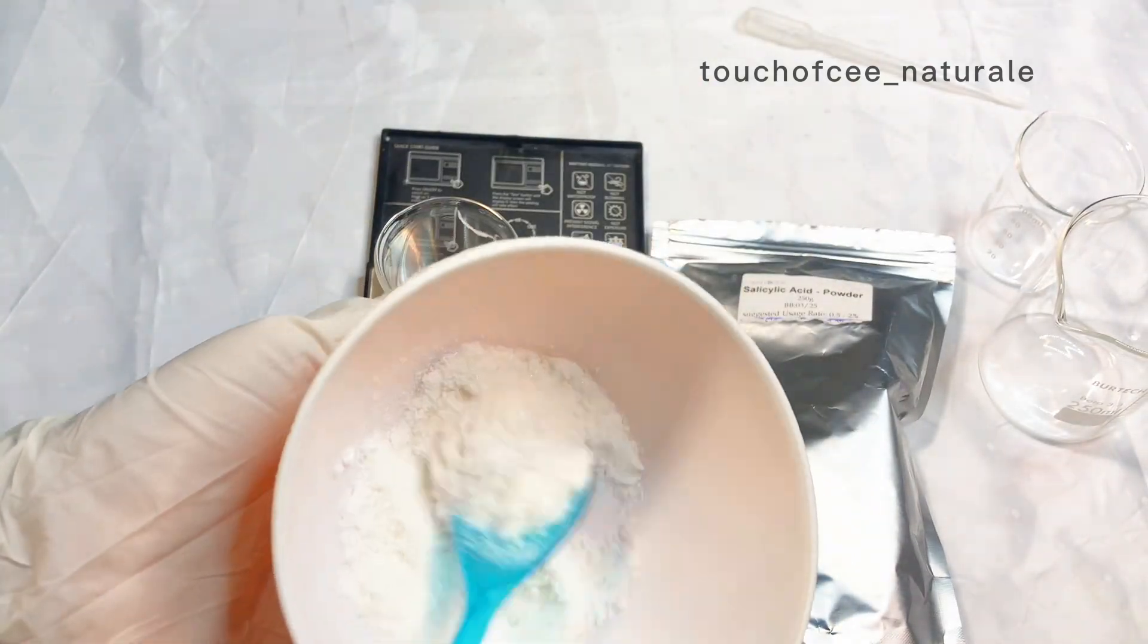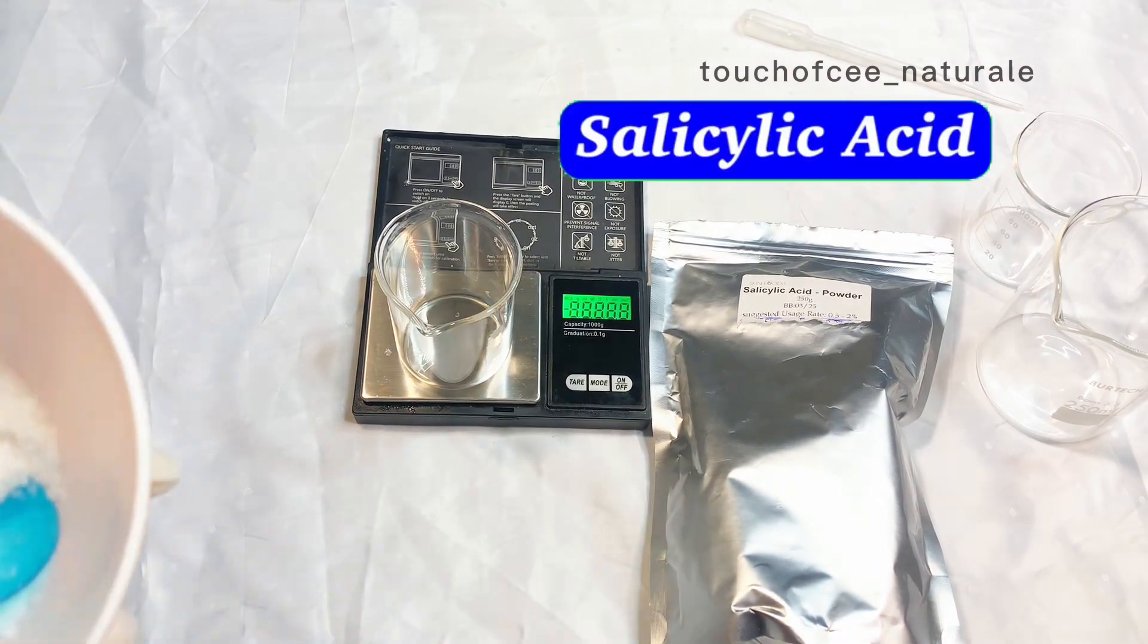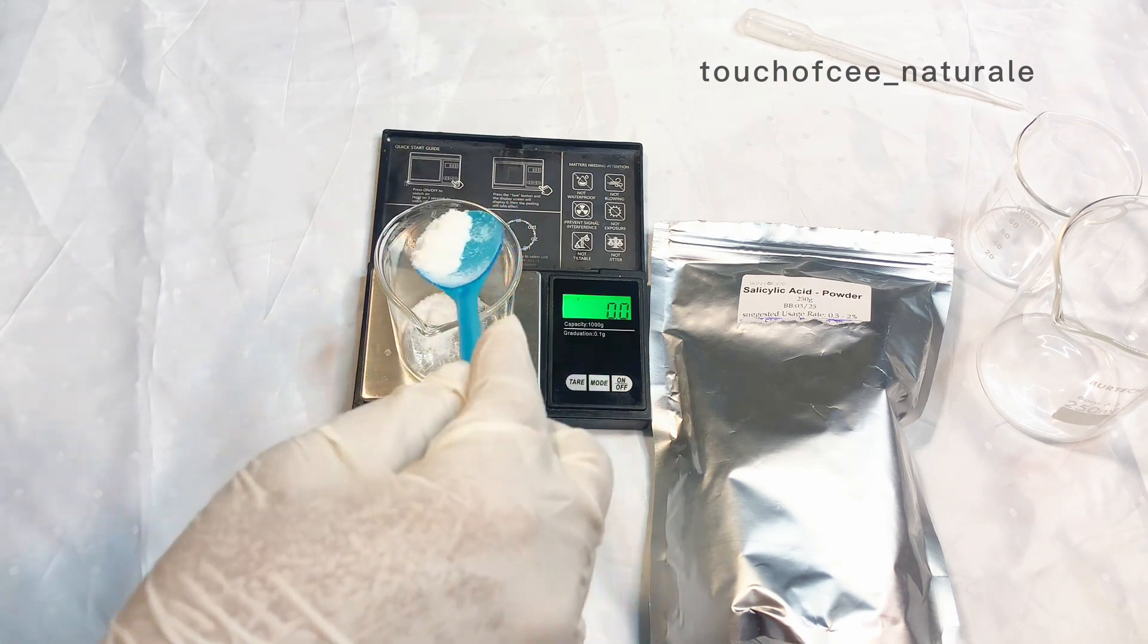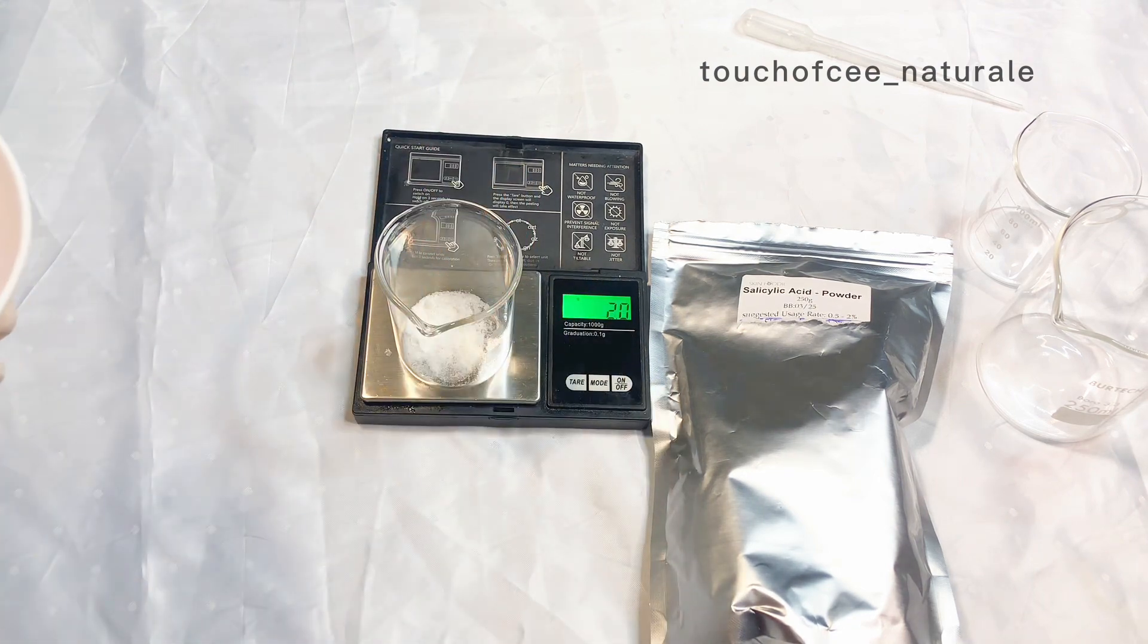So here is my salicylic acid in powdered form. Of course, you know that the highest percentage you should use of your salicylic acid is 2%. That is what I'm doing, so I'm just measuring now 2%.